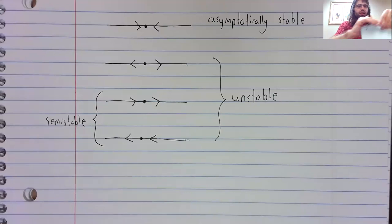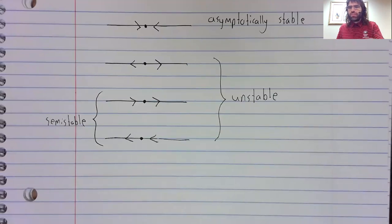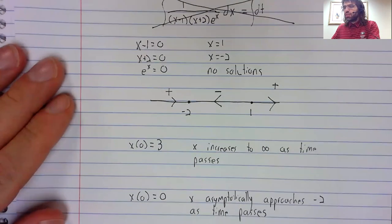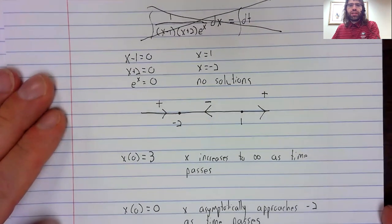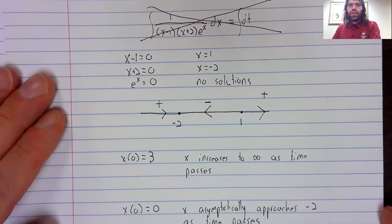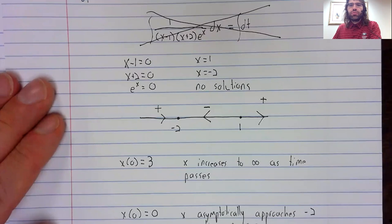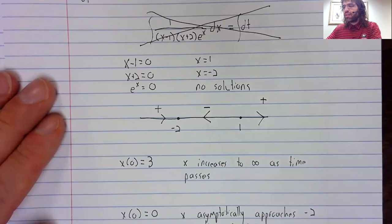So, let's now go back to an example we looked at in a previous video. Here we had two fixed points and we can now classify them.